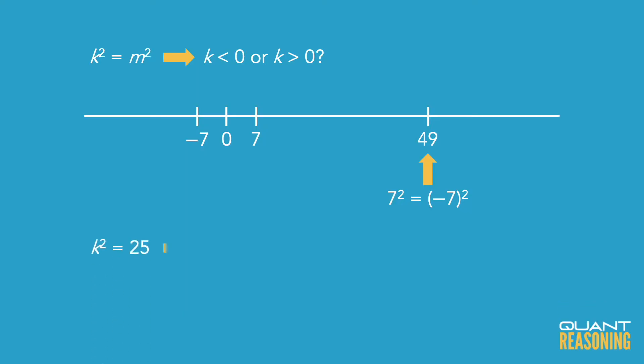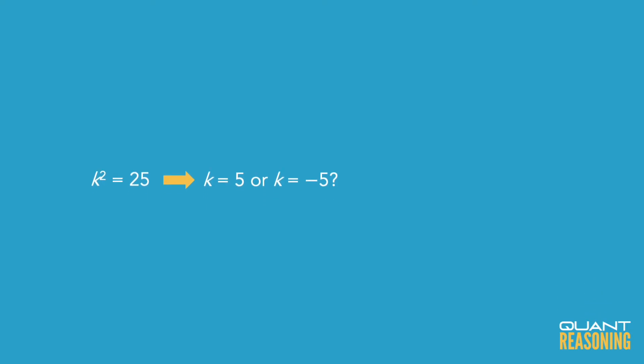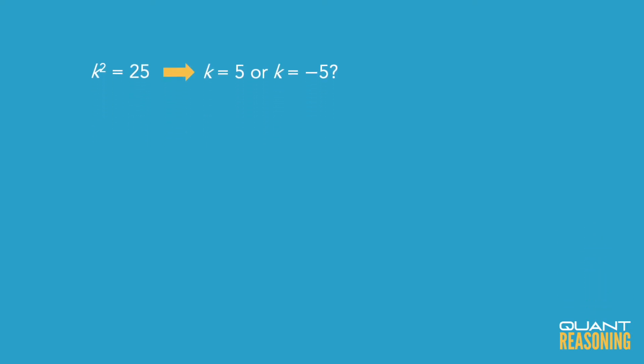Even if I tell you the exact value of k squared, you still don't know which side of zero k came from. For example, if I tell you that k squared is 25, you'll be left wondering whether k was 5 or k was negative 5. That's the challenge with even exponents, but mathematicians came up with an awesome invention to rise to that challenge, and it's called absolute value.